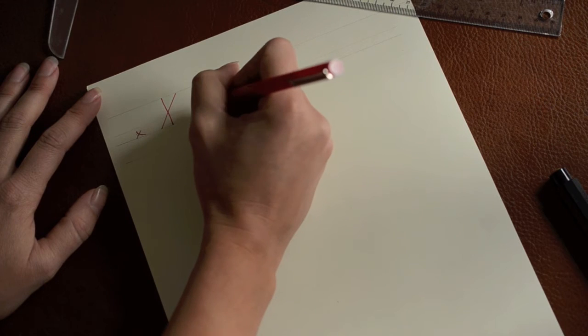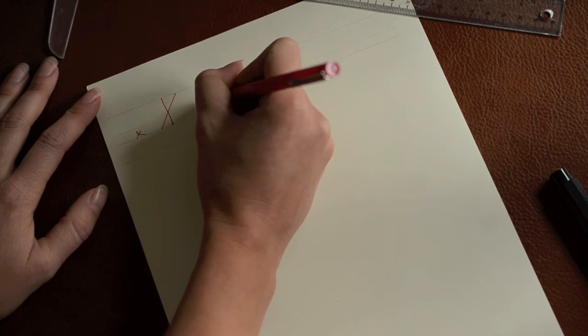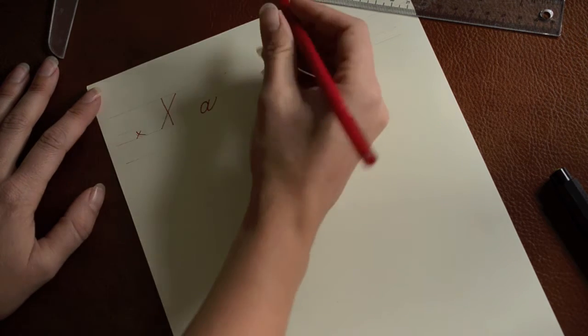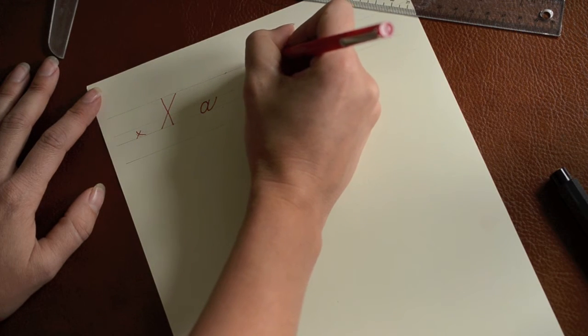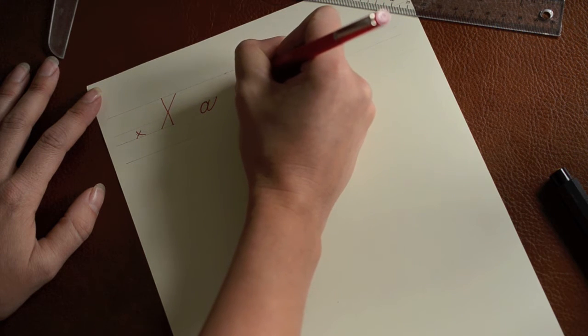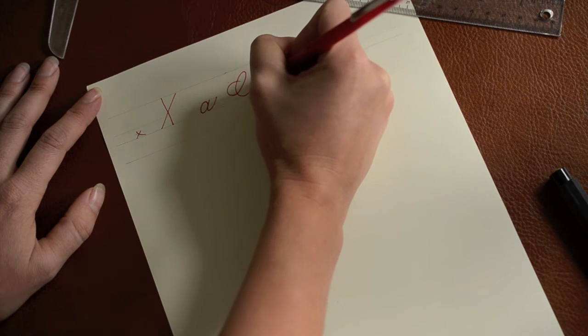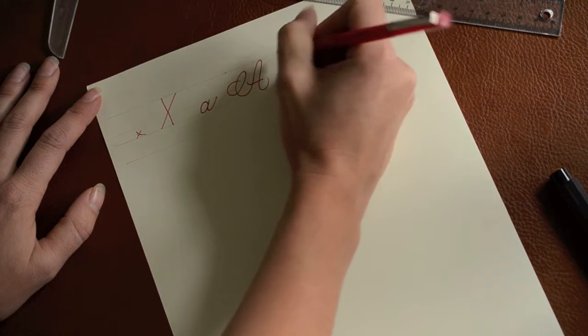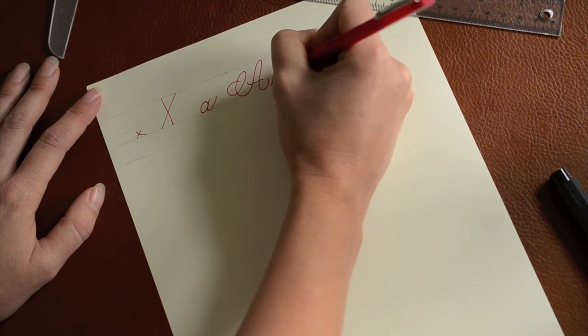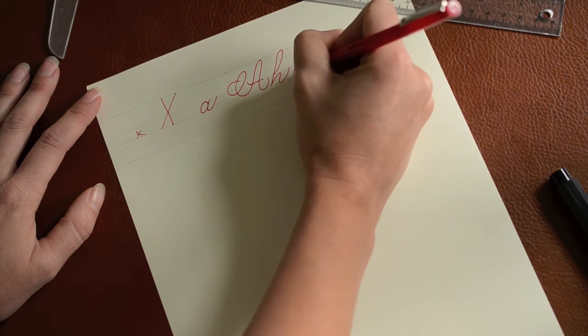So lowercase like a lowercase a will be on the x-line. An uppercase A will be three-fourths an inch and will go up to the top line. The same thing would go for an h. And a g would go down to the bottom line.